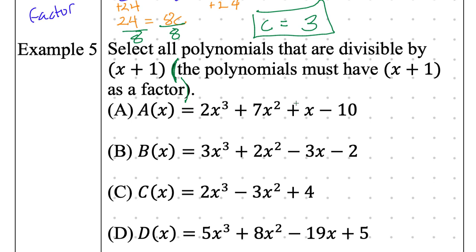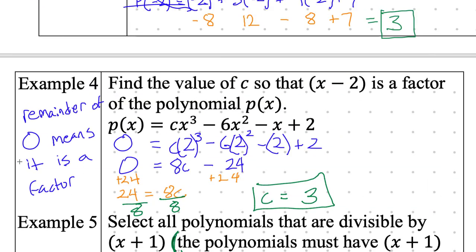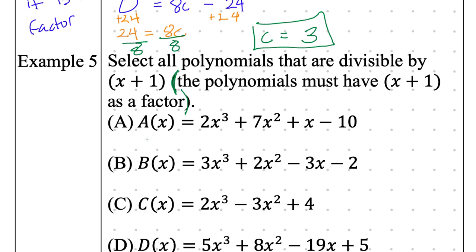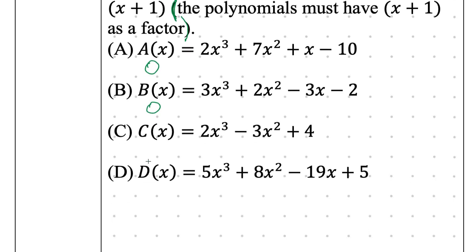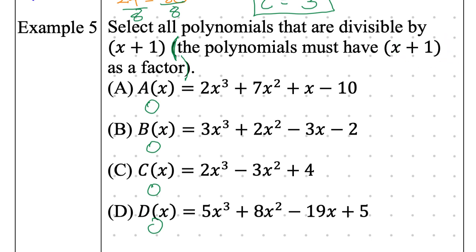What should the remainder be if it is a factor? Zero — that means this side should be set equal to zero. What is the x value I should be plugging into each of these? Negative 1, because it's the opposite of positive 1. If I plug in negative 1: 2 times negative 1 cubed plus 7 times negative 1 squared plus negative 1 minus 10. I need to simplify this. If the right-hand side equals zero, then x plus 1 is a factor. All four of these might be answers — it says select all that apply.